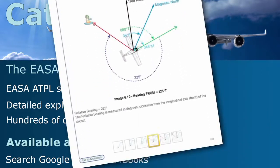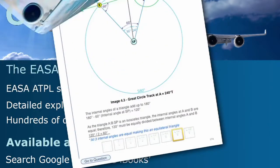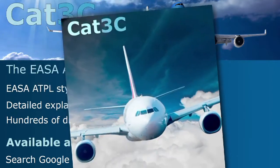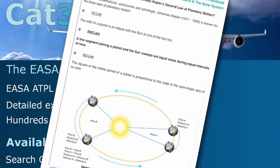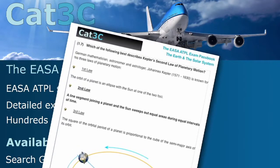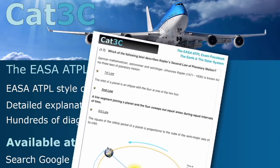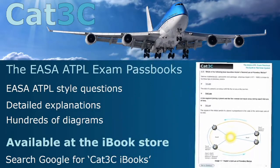The passbooks contain hundreds of exam-style questions and are supported by clear, in-depth explanations and interactive diagrams. The link to the iBooks can be found on the webpage below or at the Cat3C website at the Bookstore tab.